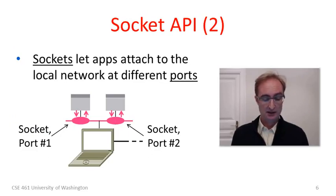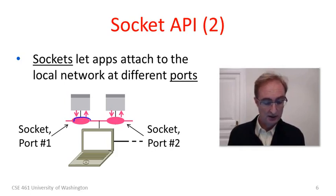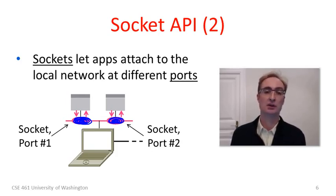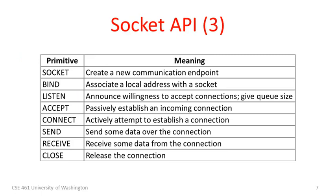This figure describes how the socket abstraction works. We have a host with two different applications, and the network application API is that horizontal line. Each application has at least one different socket structure. Each socket also has a port number which serves as a local address - this is how we can multiplex many different applications onto a single host, routing messages to the right application because each has a different port number.